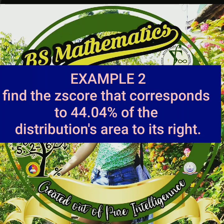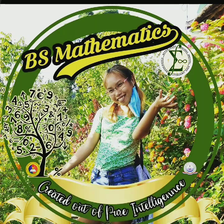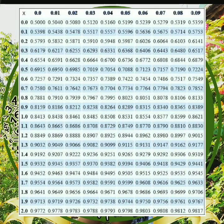Number 2: find the z-score that corresponds to 44.04% of the distribution's area to its right. First, convert 44.04% to 0.4404. Because the area to the right is 0.4404, the cumulative area is 1 − 0.4404, which equals 0.5596. Next, locate 0.5596 in the standard normal table. The values at the beginning of the corresponding row and at the top of the column give the z-score, which is 0.15.